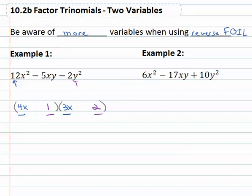Now we want to check our signs. We know we want to end up with negative 2y², so 1y times 2y — and we don't really need the 1 in front of the y. We know one of them has to be negative so that they multiply to a negative number, and we also know we want them to add to negative 5xy.